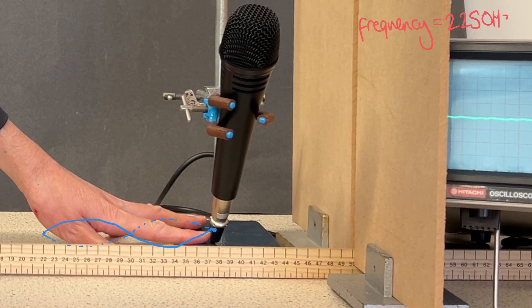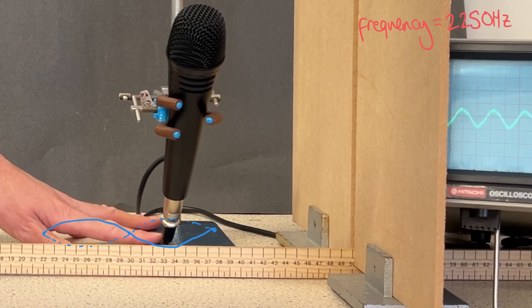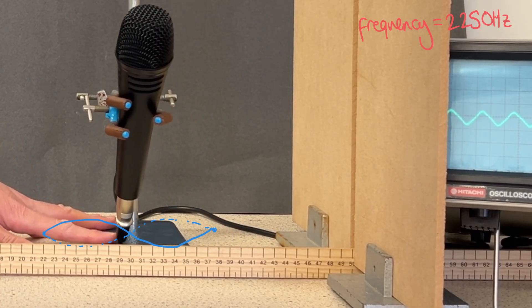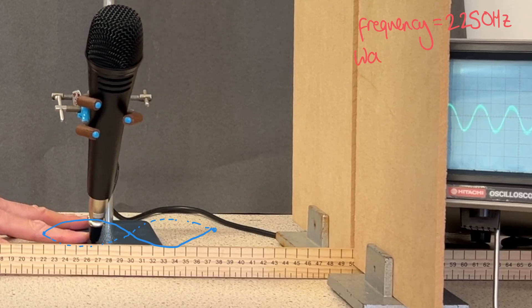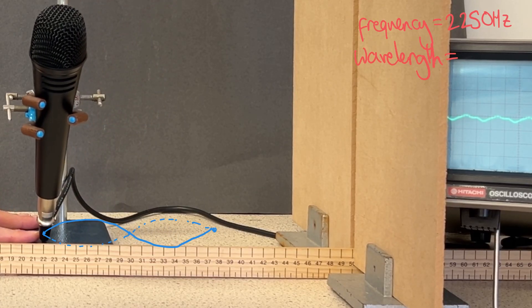Here, starting at a node at 37.5 cm, I then move the microphone through the next node and on to the subsequent node, and by the time it gets to that second node, it's on about 22 cm.